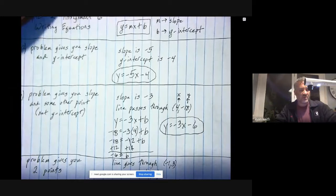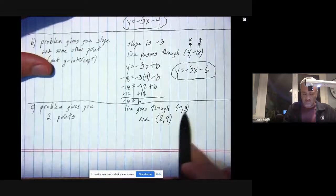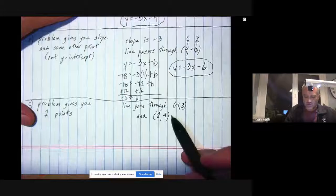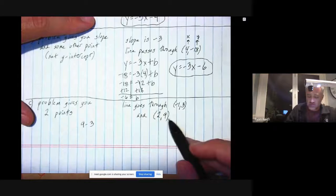Last but not least, what if the problem that you're doing only gives you two points? They don't give you the slope for free, they just give you two random points that the line goes through. Well, in the previous assignment, in the previous lesson, you learned a trick for finding the slope between two points - you've already been taught this.